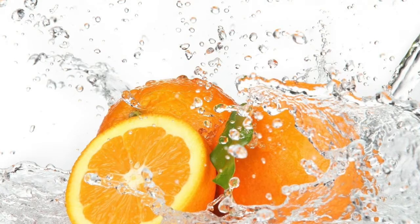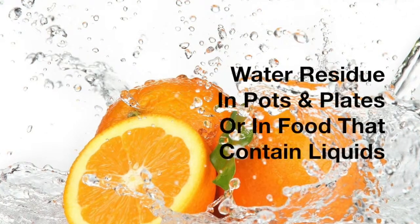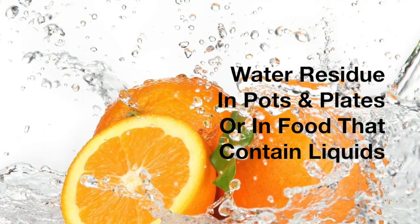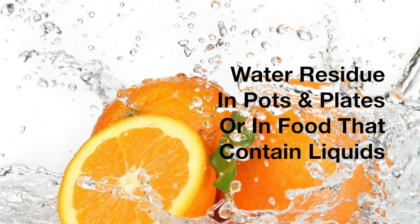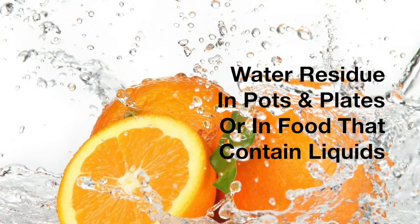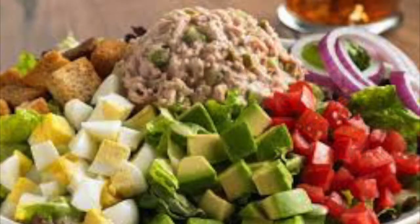Bacteria can grow in water-rich or poor environments; however, in food, bacteria loves moisture-rich conditions. Such examples include water residue in pots and plates, or in foods that contain liquids such as fruit salads.